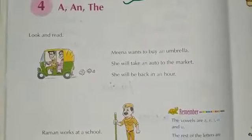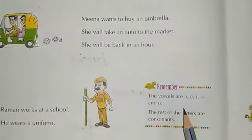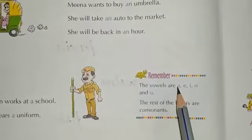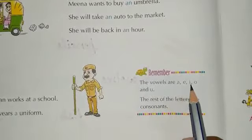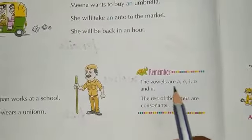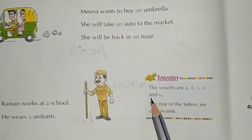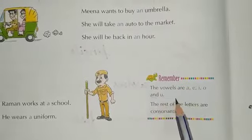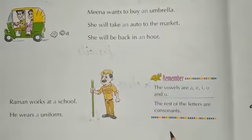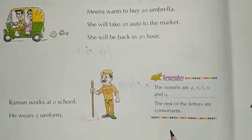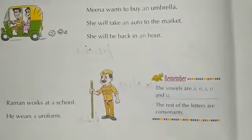That is vowels. As we know, जो vowels होते हैं वो हैं a, e, i, o, and u — ये हो गए vowels. इनके बिना जो बाकी letters बच गए हमारी ABC में, वो होते हैं consonants.